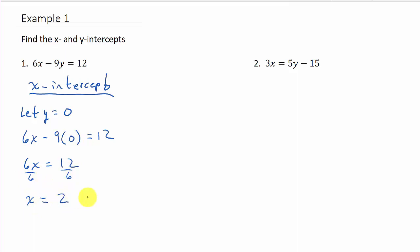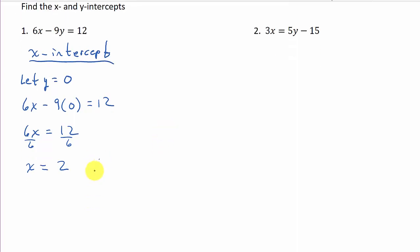And then I'm going to divide both sides by 6. So I get x equal 2. So my x intercept is the point. Remember your point is an x, y coordinate.